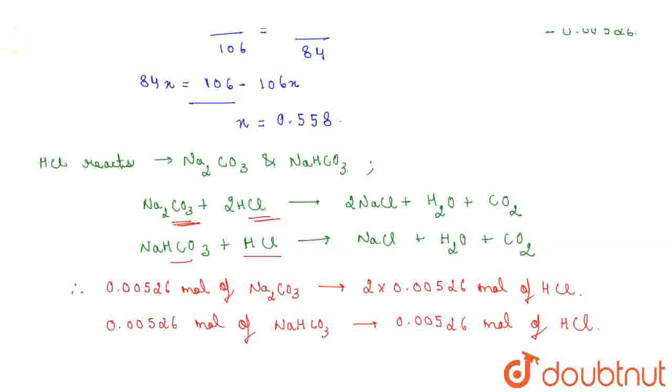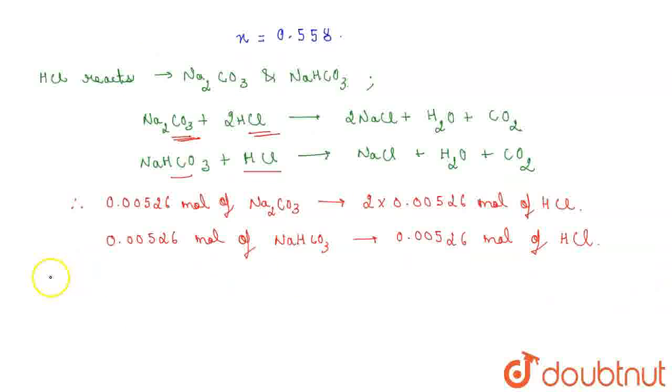Clear? Now, total moles of HCl required to react with mixture of Na2CO3 and NaHCO3 will be 2 into 0.00526 plus 0.00526 which will give the value 0.01578 mole.